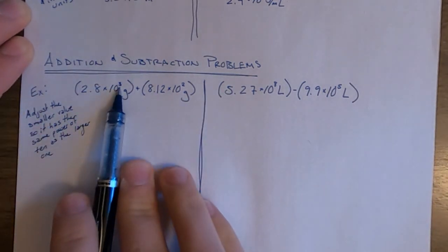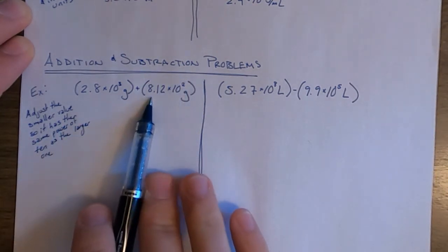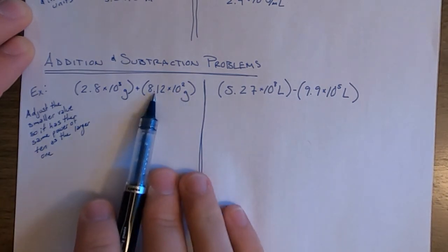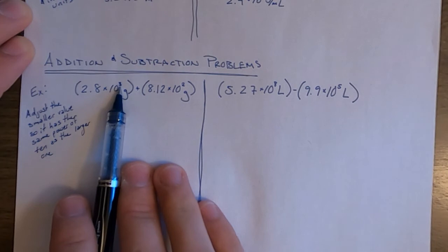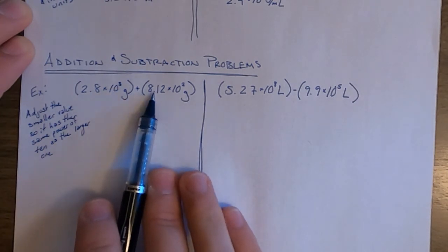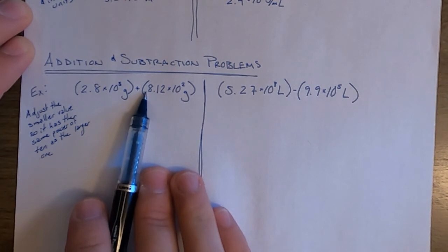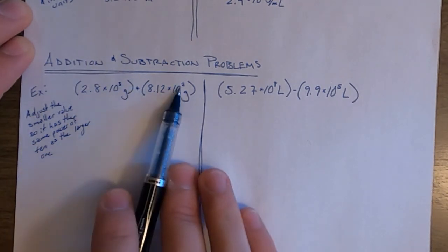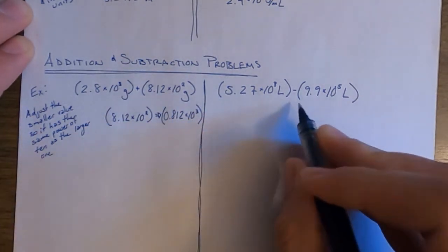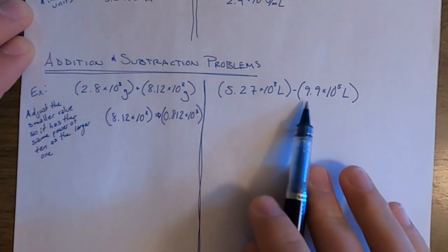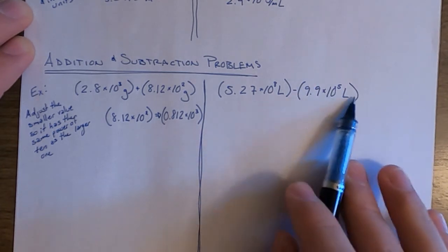In the first example, because these are both positive exponents, the smaller value is 8.12 times 10 to the second power, and we're going to adjust it to be expressed as some number times 10 to the third power. To raise the power of 10, we move the decimal point to the left by one space. In the second example, the smaller value is 9.9 times 10 to the fifth power. The difference between the exponents is three, so we move the decimal point over three spots.